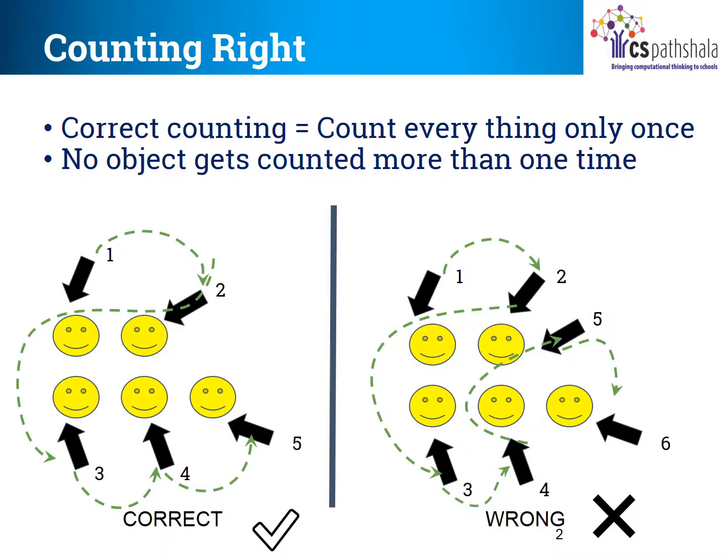Let's take an example. Children, can you see the smiley faces on the left-hand side of the slide? The correct way to count them is one by one, such that every object gets touched or counted only once. Notice the arrows — we will go over the dotted path and count the smileys one by one. This is the correct way because we counted each and every smiley only once.